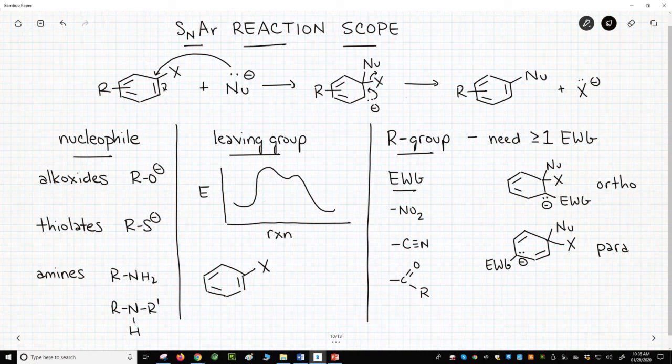Second, we have a leaving group. The SNAR has two steps. The difficult rate determining step, or RDS, is the first step. This is the slow step.